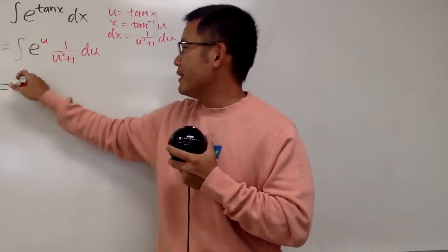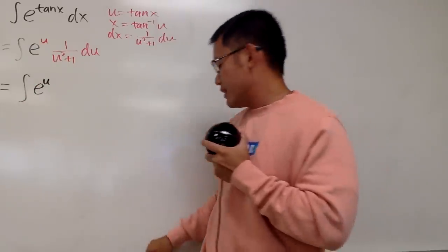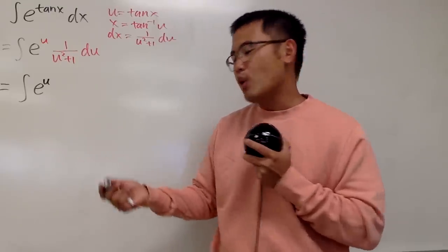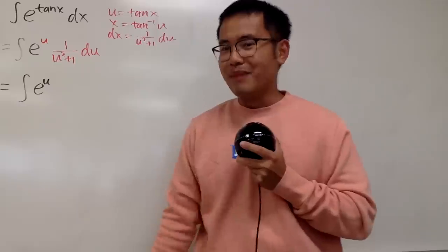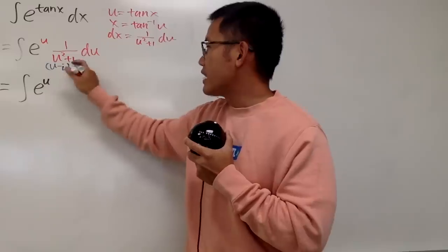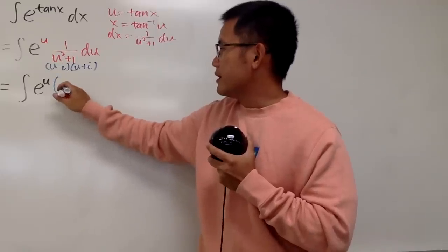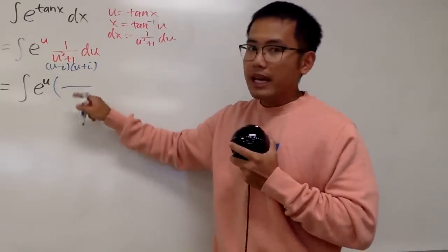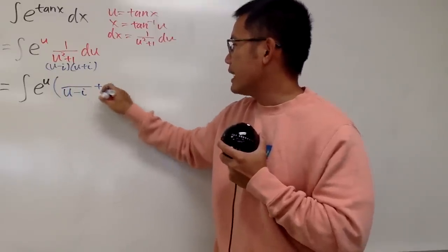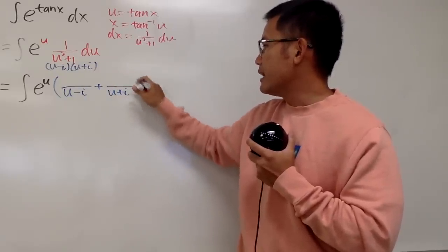So here we have the integral with e to the u. To break the fraction apart, we have to factor u squared plus 1, and this is where we use complex numbers. Factoring gives us u minus i times u plus i. Now we set up partial fractions: some constant A divided by u minus i, plus another constant B over u plus i.